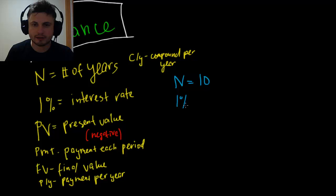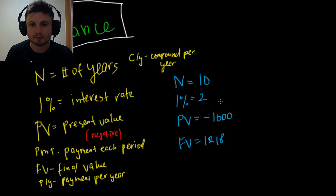I percent equals 2, your present value is minus 1,000. And then at the end, you write your final value equals 1,218. And here, even if you just write what buttons you press, you can write use finance or use finance button.